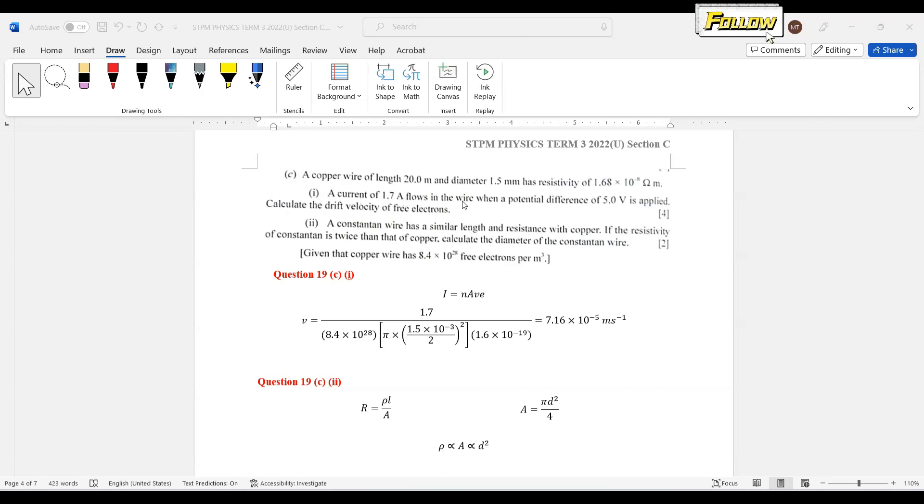We have current 1.7 amperes flowing in the wire when a potential difference of 5 volts is applied. Calculate the drift velocity of free electrons. From what I can see, I can just apply the formula I = nAve since we have all the information needed.